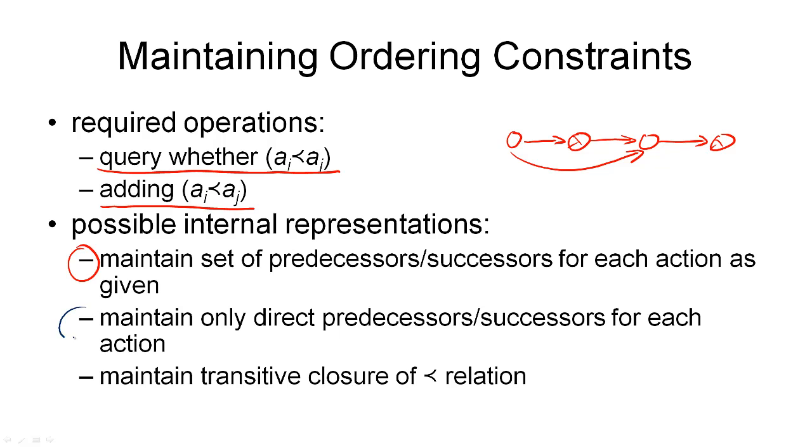The second option would be to store only direct predecessor successor relations. So in this case, we would not store this relation here. This would not be part of our internal representation. That would save some storage. But the problem is, if we query the order between these two nodes, again, we have to compute the transitive closure.